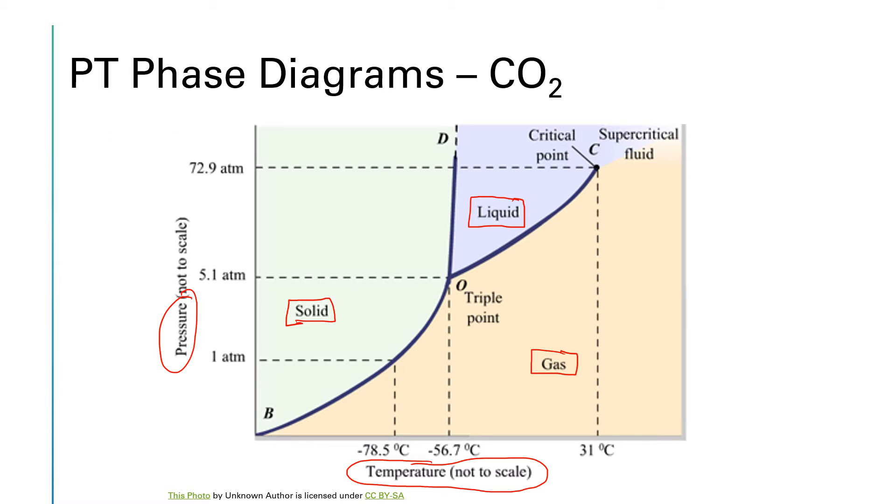If we're looking at this line segment that connects the solid phase with the gas phase, the line segment itself, or the curve, represents either sublimation or deposition, depending on which direction you're moving. If we look at this line segment that connects the solid phase and the liquid phase, if we move one direction, that would be melting. If we move the other direction, it would be freezing.